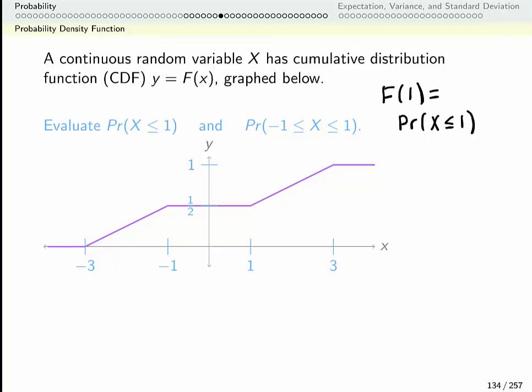So to figure out the probability that X is less than or equal to 1 we just have to find F of 1 which is here at 1 half. So this bit is 1 half and again this is straight from the definition of a cumulative distribution function.